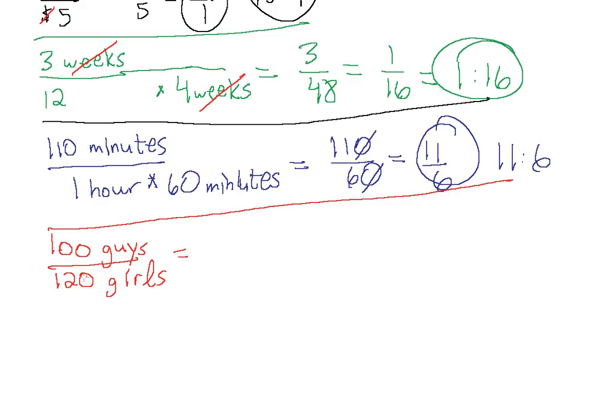We simply just go ahead and simplify the fraction. We can cancel these two zeros, and this becomes 10 over 12, or 5 over 6. So the ratio of guys to girls is 5 to 6.